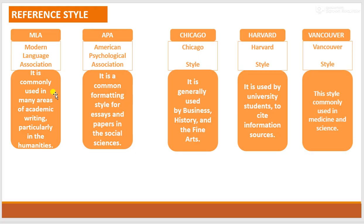Here, five styles of referencing are presented: MLA (Modern Language Association), APA (American Psychological Association), Chicago style, Harvard style, and Vancouver style. MLA is commonly used in academic writing, particularly in the humanities. APA is a common formatting style for essays and papers in social sciences. Chicago style is used by business, history, and fine arts. Harvard style is used by university students to cite information sources, while Vancouver is used in medicine and science.